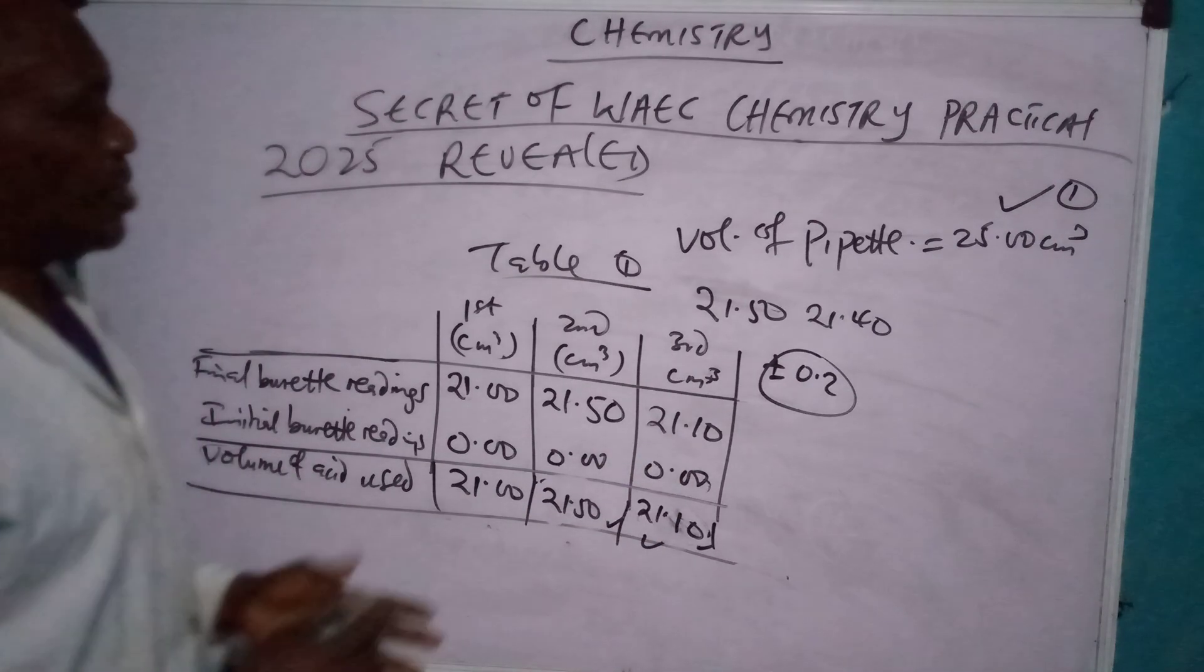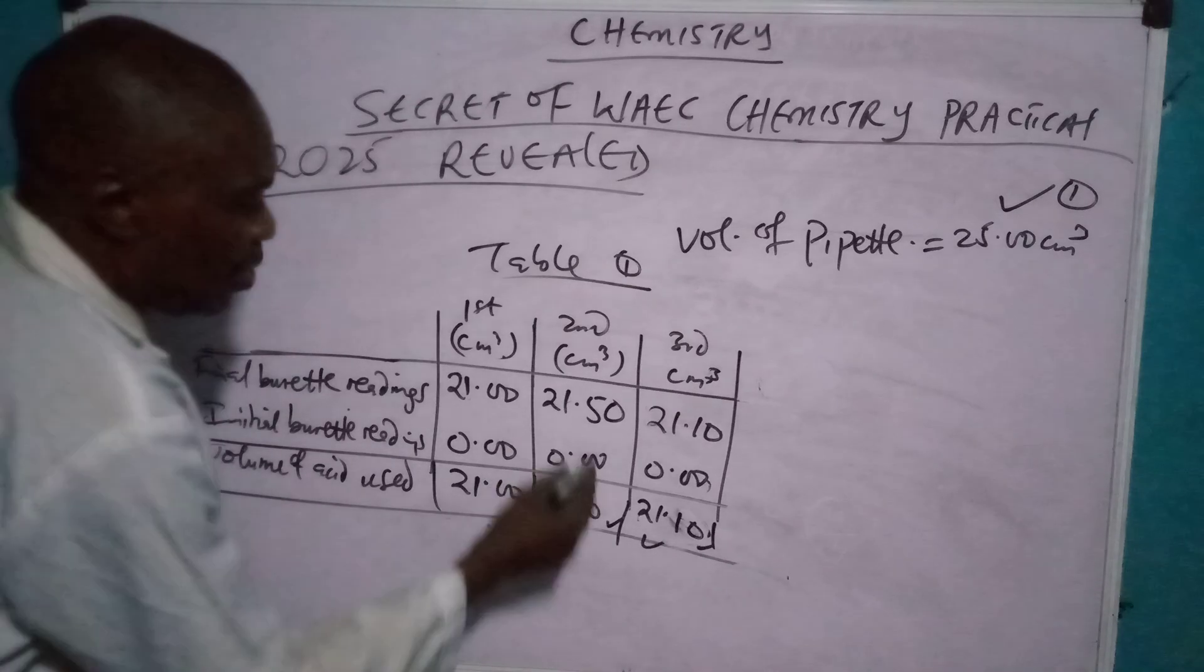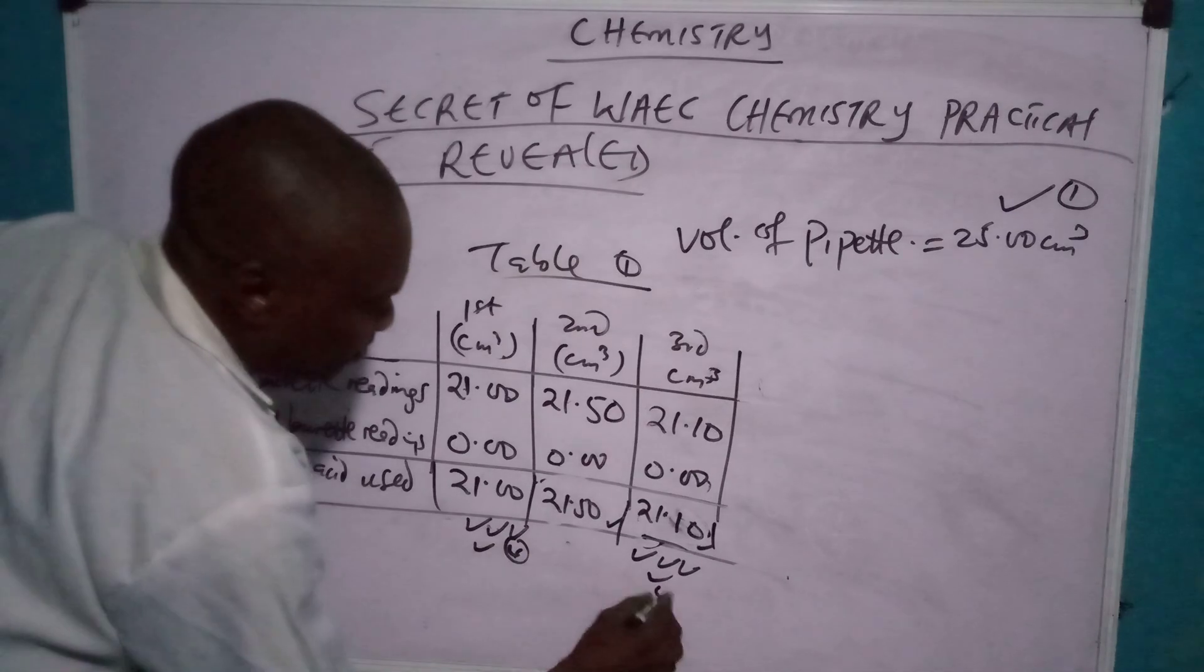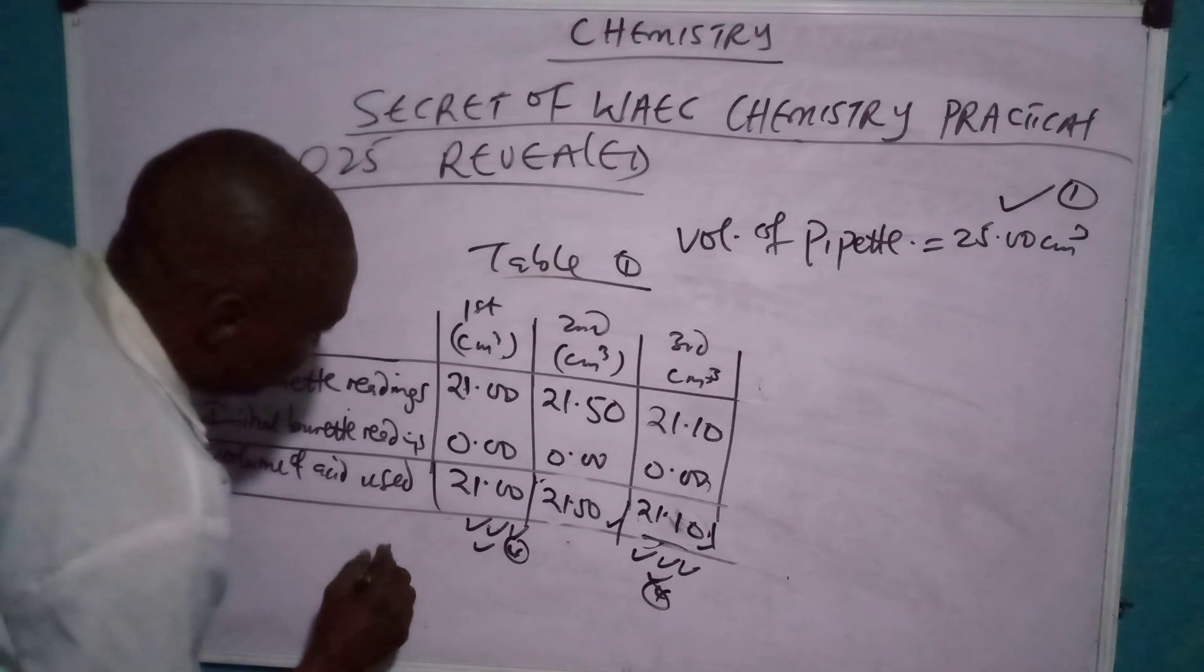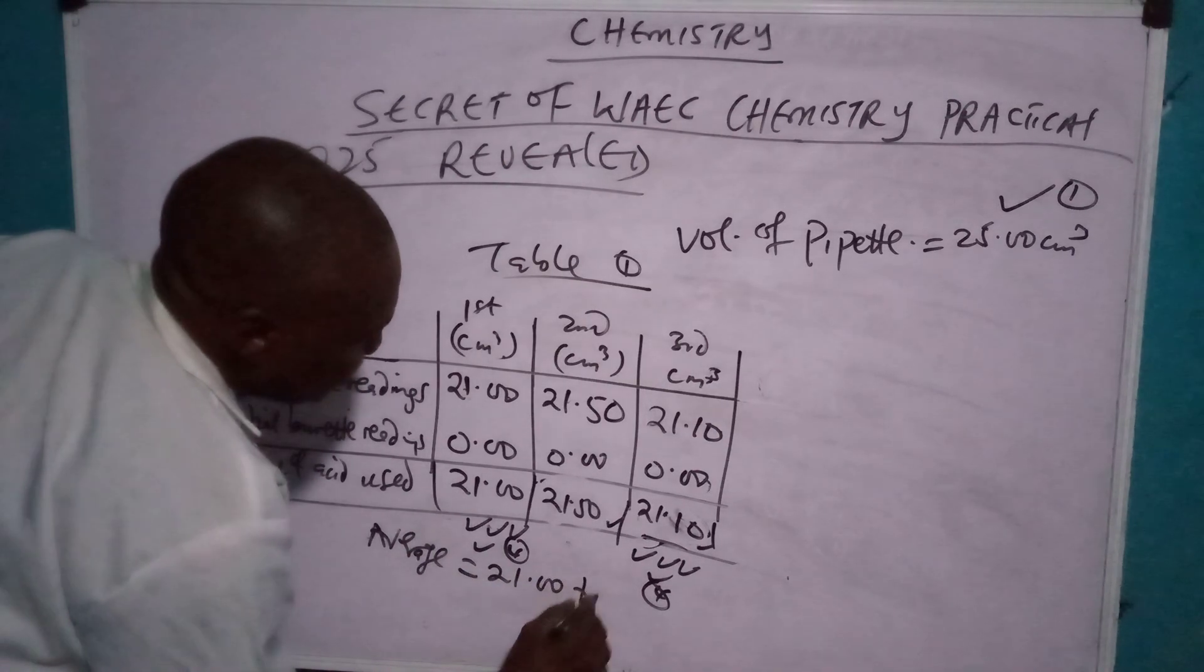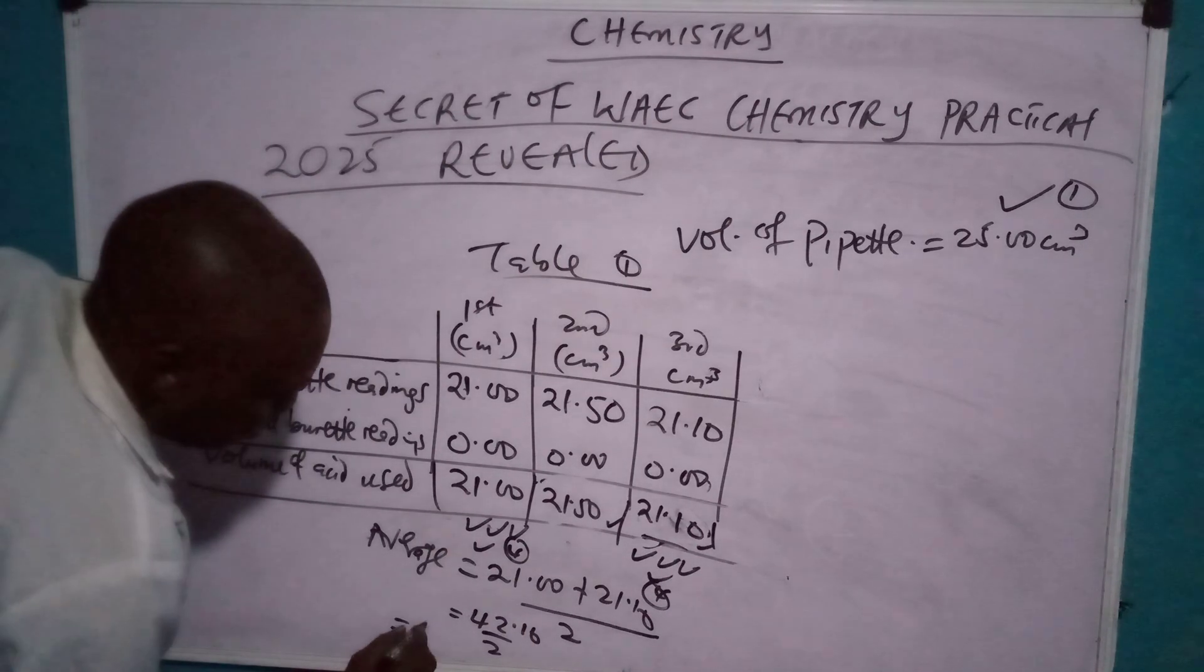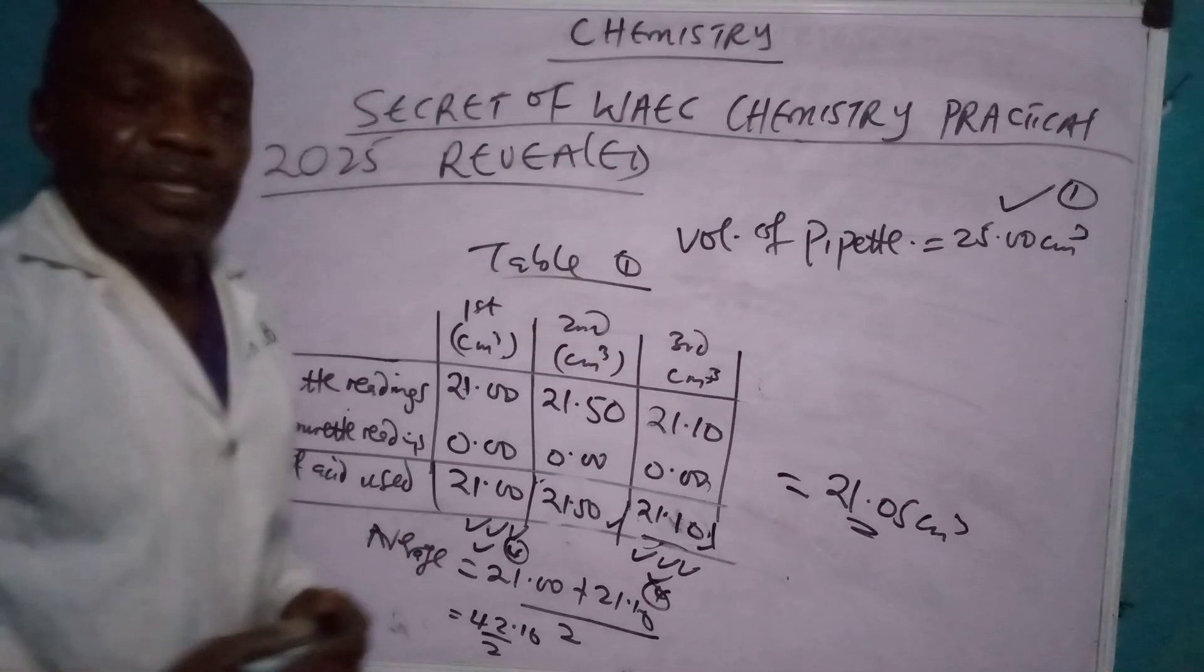So you now subtract it. You have 21.00, 21.50, 21.10. Remember, we subtract this initial from the final. This is the readings we have. We now say, what do we now do? The second reading did not tally. We look at the first one. If you use the second one, you would get zero. Therefore, this one is 21.00, the one you want to use is this one. You now have four ticks. When they are marking it, they give you four ticks here, making four. Here four. So you now have the average. This is the two you are going to use to average. However, don't cancel anyone. This is the two you are going to use. You have average: 21.00 plus 21.10 over 2 gives you 42.10 over 2. It gives you 21.05 cm³.